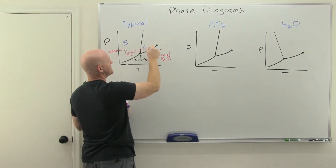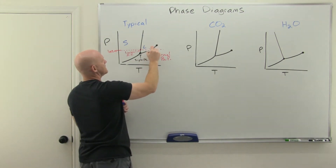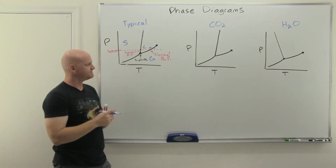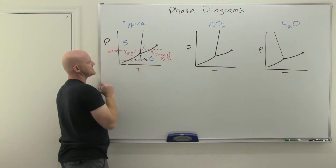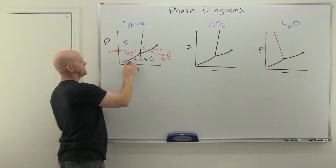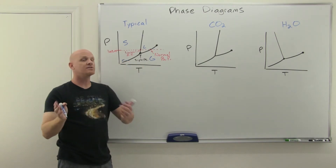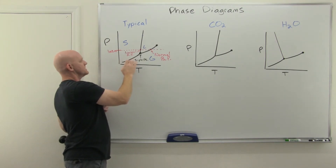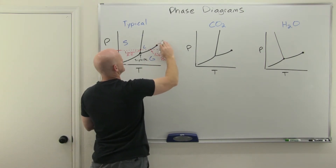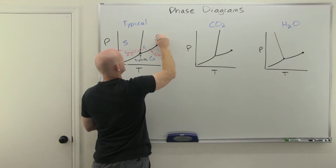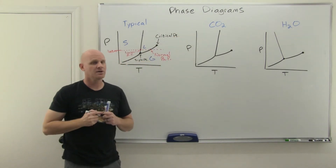There's one more point: the critical point. It has a critical pressure and a critical temperature associated with it, and this critical point is different for different substances. To understand it, consider this: you have gas and want to turn it into a liquid. You can either raise the pressure to cross the liquid-gas line of equilibrium going up, or lower the temperature and cross it going left. Either one works, and as you cross that line, the gas condenses into a liquid — a very noticeable event.